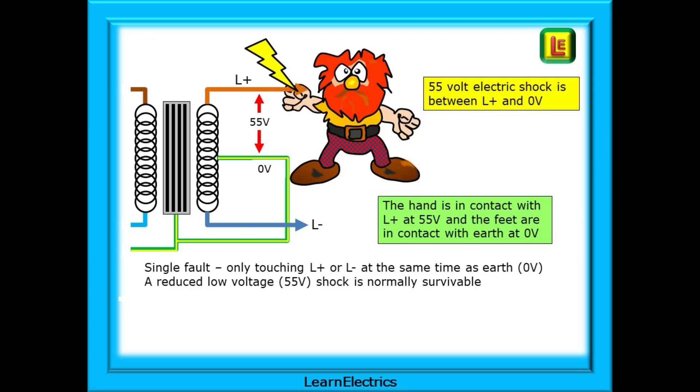Just to make that clear, let's suppose that our colleague has his feet on the ground or on something earthy like scaffolding which is touching the earth. At the same time he touches the loose L plus wire. He would only get a 55 volt electric shock between L plus and zero volts. His hand is in contact with L plus at 55 volts and the feet are in contact with earth at zero volts.